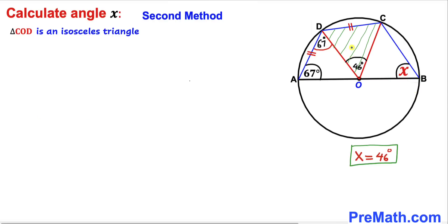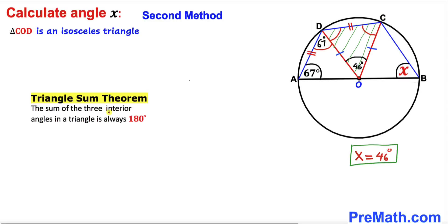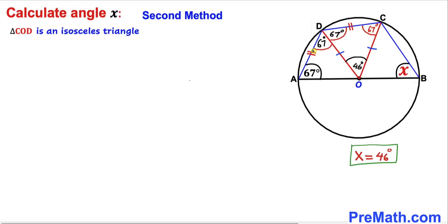For the second method, focus on triangle COD. Since OC and OD are radii, this is an isosceles triangle and the two base angles are equal. With central angle COD = 46 degrees, each base angle is (180 − 46) / 2 = 67 degrees. So the full angle ADC, combining both base angles of triangles AOD and COD, is 67 + 67 = 134 degrees.